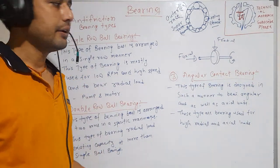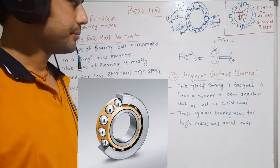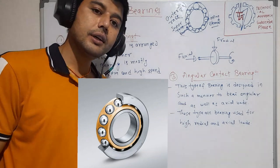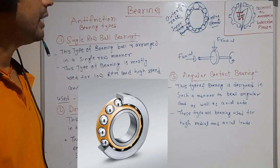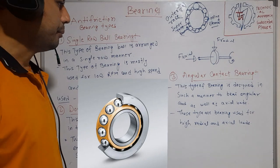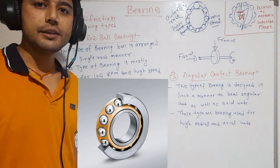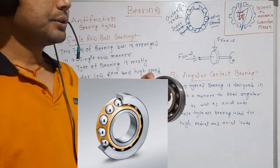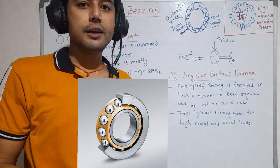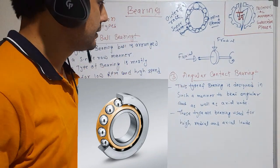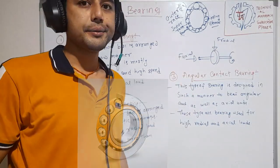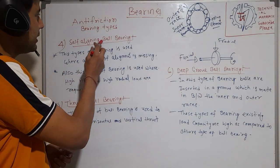The third type is the angular contact bearing. This type of bearing is designed to bear both angular and axial loads. It is used for high radial and axial loads — whether you apply axial load or radial load, it carries both loads with the same bearing.